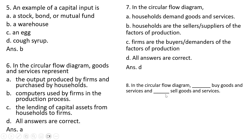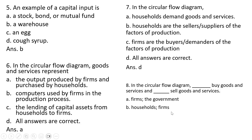Question 8: In the circular flow diagram, blank buys goods and services, and blank sells goods and services. The correct answer is B. Households buy goods and services, and firms sell goods and services. Answer choice B.